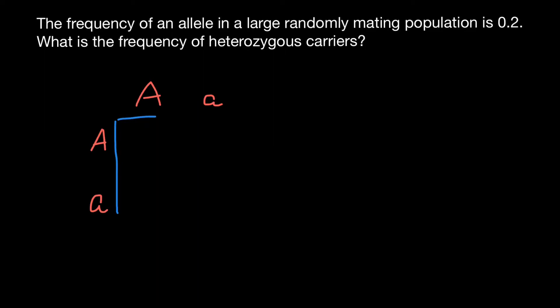And take a look at what we are going to get. According to this Punnett square, the frequencies of the different genotypes are going to be as follows.